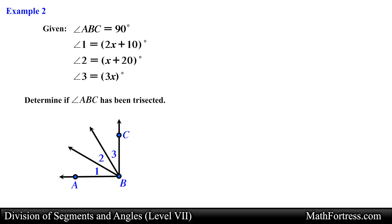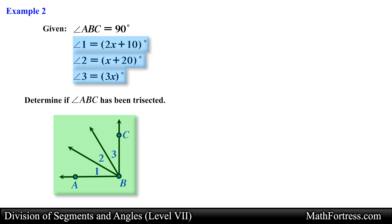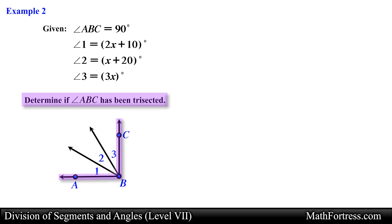Given that angle ABC is equal to 90 degrees, angle 1 is equal to 2x plus 10, angle 2 is equal to x plus 20, and angle 3 is equal to 3x, determine if angle ABC has been trisected. In this problem we are provided with a diagram and the measurements of 3 distinct angles. We are asked to determine if a particular angle has been trisected. To do so we need to show that angle 1, angle 2, and angle 3 are congruent.